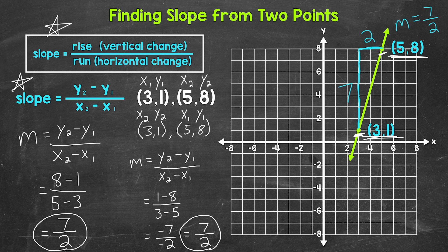Something we can't do is mix and match. For example, with (3, 1) and (5, 8), we can't make 3 x1 and then 1 y2, and then 5 x2 and 8 y1. We can't mix and match — that's not going to give us the correct slope.